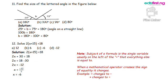25 plus B plus 75 equals 180. Adding them together, that is 25 plus B plus 75, we have 100 plus B equals 180. Making B the subject of the formula, we have B equals 180 minus 100, which will give us 80.